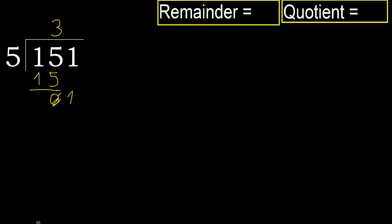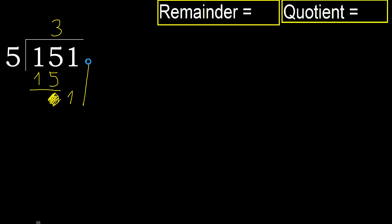Next, bring down 1. 1 is less, therefore next — there is no number, therefore finish it. Complete: always complete with 0, because here we finish it with this number.